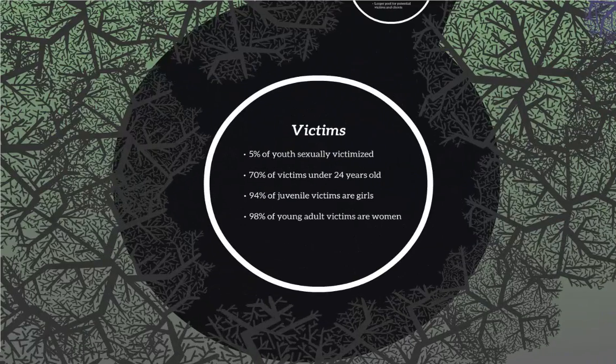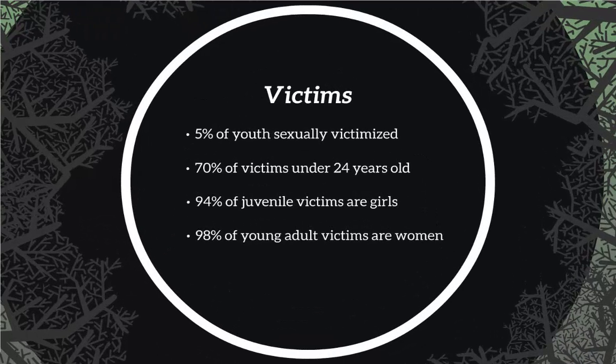The first group we're going to talk about are victims. The first statistic is the number of sexually victimized youth, and if we drill down further, the number of sexually trafficked victims. Of those victims, 70% of them are under 24 years of age. Of juvenile sex trafficking victims, 94% of them are girls, and of young adult victims of sex trafficking, 98% of them are women.